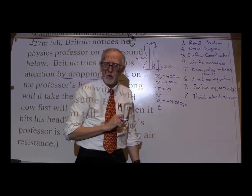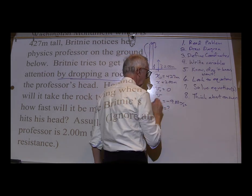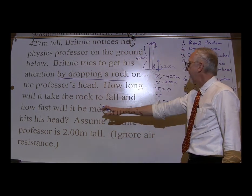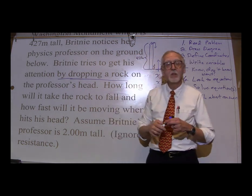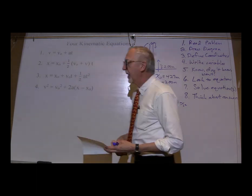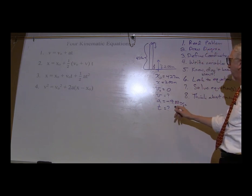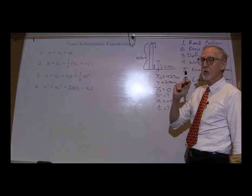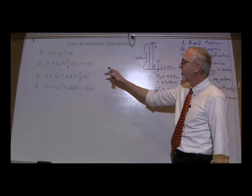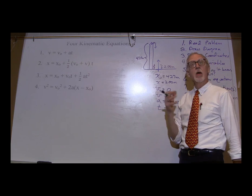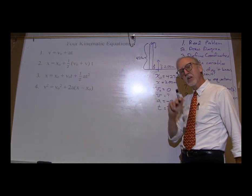The question asks for t and v. Let's solve for v first. Can we use the first equation? No — it's got a t in it. The second? No — also has t. The third? No v in it. The fourth? Yes — we can use the fourth, and there's no t in it, so we know everything we need. We can solve for v using equation 4.